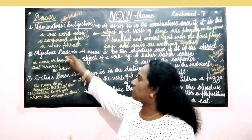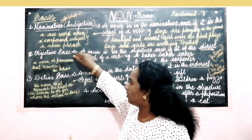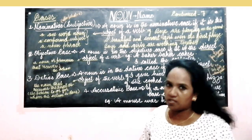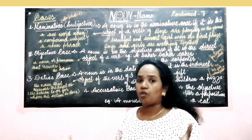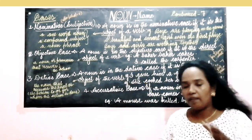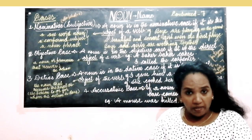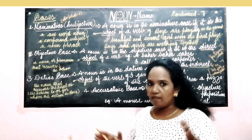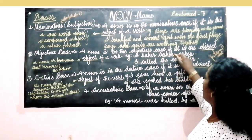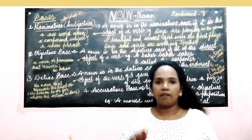Now let us move into the objective case. In the objective case we discuss the dative case and the accusative case. All three are related to objects. One is about the direct object, another is about the indirect object, and the third is about a preposition plus noun — that is the object. A noun is in the objective case if it is the direct object of a verb.